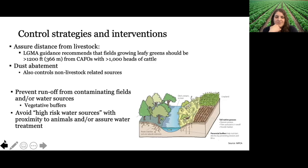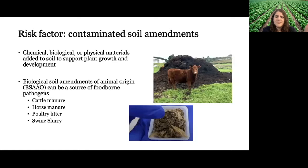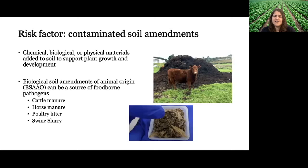Another risk factor is contaminated soil amendments — chemical, biological, or physical materials added to soil to support plant growth, essentially fertilizers. Biological soil amendments of animal origin (BSAAO) can be a source of foodborne pathogens. Examples include cattle manure, horse manure, and poultry litter — which is not just chicken poop but also a combination of chicken bedding, feathers, urine, and poop. Poultry litter makes a great fertilizer due to high phosphorus and nitrogen content, but like other manures it can potentially have high amounts of Salmonella or other pathogens.